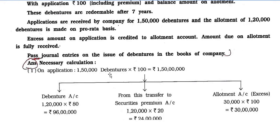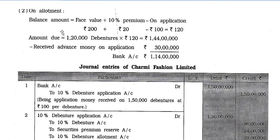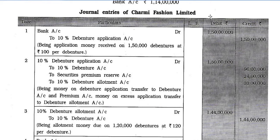Necessary Calculation: On application — 1,50,000 × Rs. 100 = Rs. 1,50,000 received. Of this, 1,20,000 × Rs. 80 = Rs. 96,000 to debenture account, Rs. 1,20,000 × Rs. 20 = Rs. 24,000 to Security Premium account, and excess application money 30,000 × Rs. 100 = Rs. 30,000 transferred to allotment account. On allotment — balance due = Rs. 200 + Rs. 20 premium − Rs. 100 paid on application = Rs. 120 per debenture; 1,20,000 × Rs. 120 = Rs. 1,44,000 due, minus advance Rs. 30,000 = Rs. 1,14,000 bank receipt.